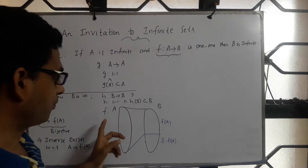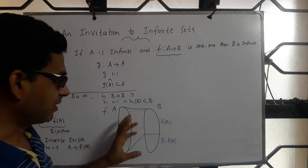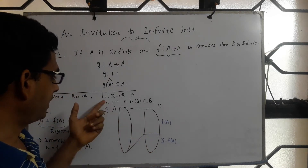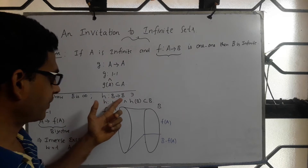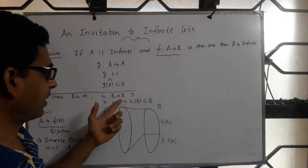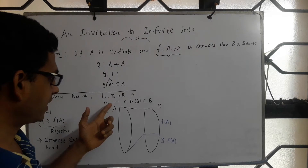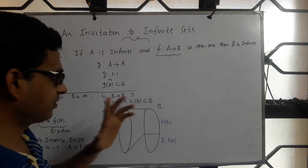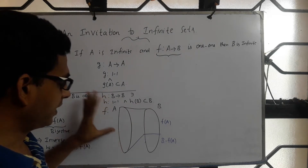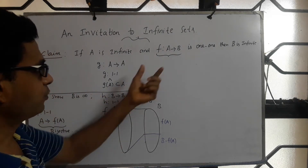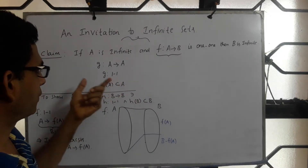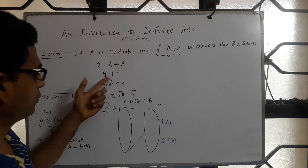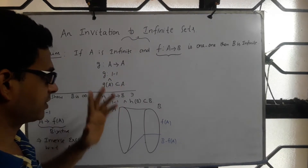Now we are attempting one more proof. As part of this, we will get an explicit function. Here is a function h from B to B, and we will show that h is 1-to-1 and h(B) is a strict subset of B. To come up with h, I will make use of f and also the function g which is from A to A, where g is 1-to-1 and g(A) is a strict subset of A.